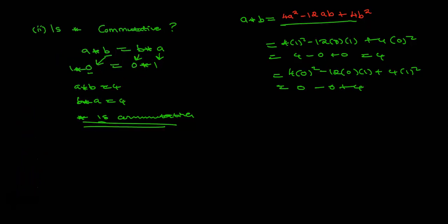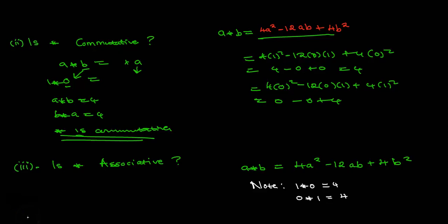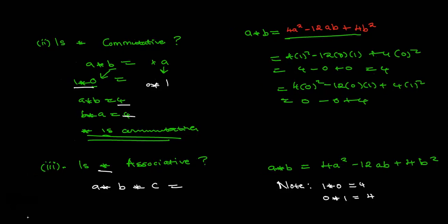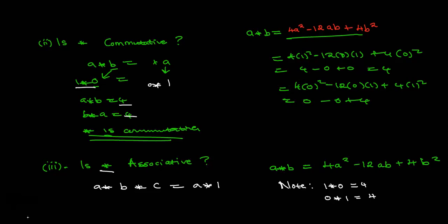Question 3 asks if star is associative. To show associativity, we need (a star b) star c to equal a star (b star c). Note what changes is just the grouping order — on the left side we start with a star b in the bracket, then star c; on the right side we start with b star c, then a star that result. For commutativity we use a star b equals b star a, but for associativity this is the form we test.